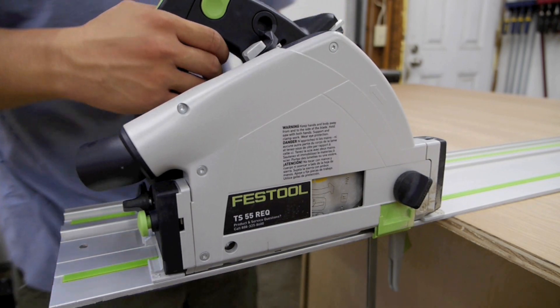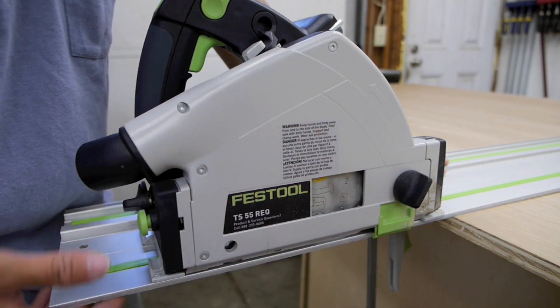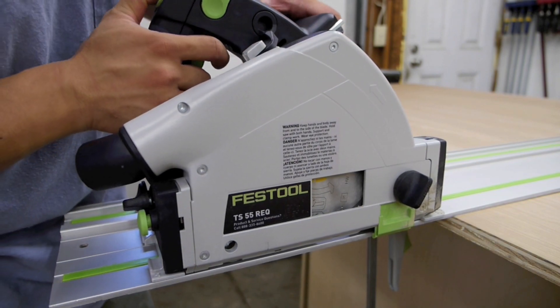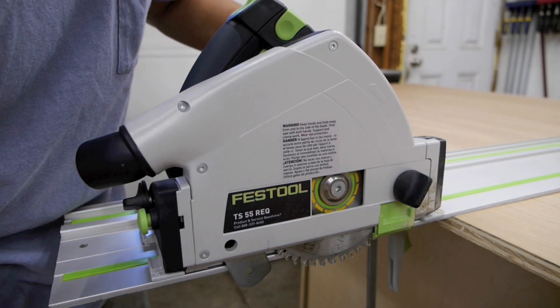Just a quick safety note here. You see that I have my guide rail extended behind the plywood quite a bit. And this is to make sure that when I plunge the saw the blade can completely plunge to the depth that I need to cut before contacting the plywood.